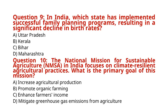Question 10: The National Mission for Sustainable Agriculture (NMSA) in India focuses on climate-resilient agricultural practices. What is the primary goal of this mission? A. Increase agricultural production. B. Promote organic farming. C. Enhance farmers' income. D. Mitigate greenhouse gas emissions from agriculture. The correct answer to Question 10 is option C: Enhance farmers' income.